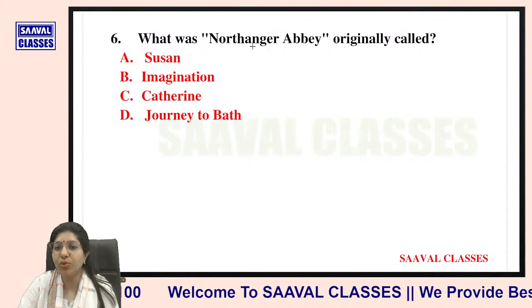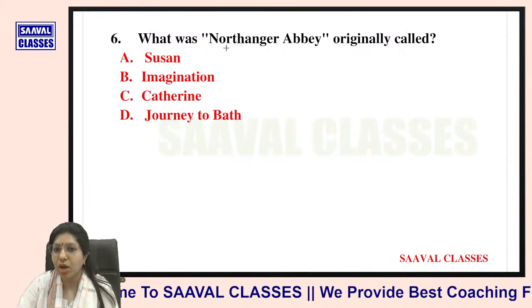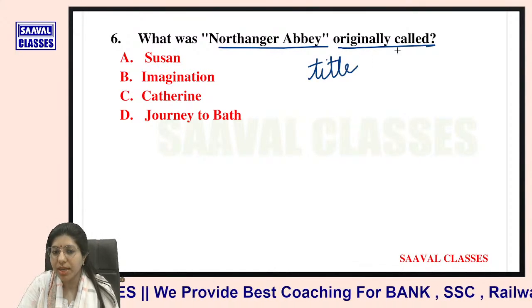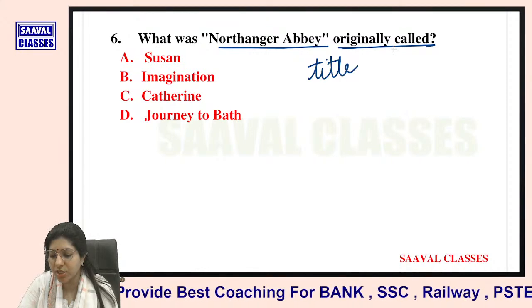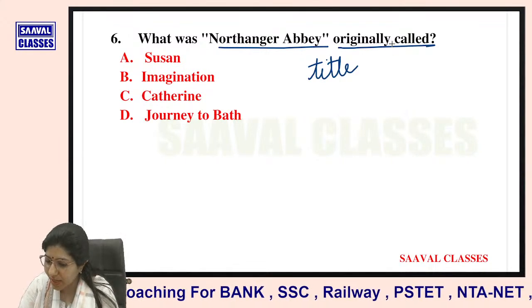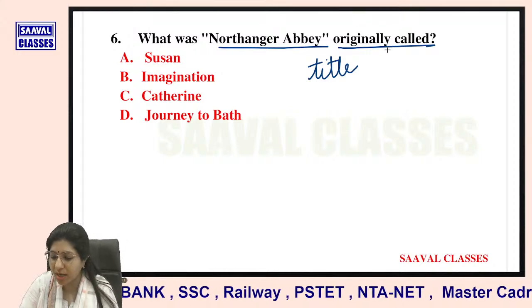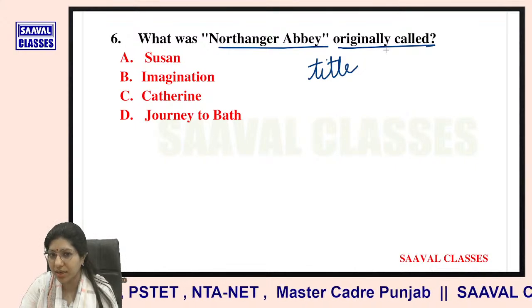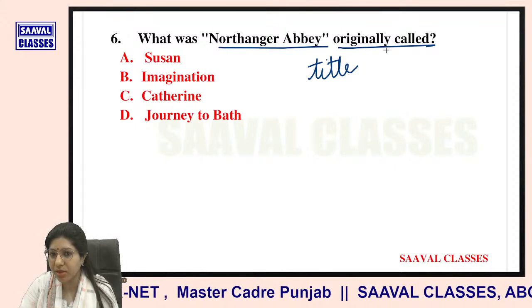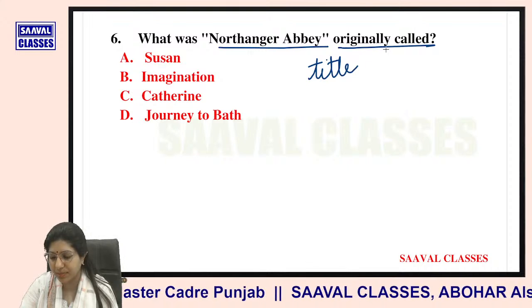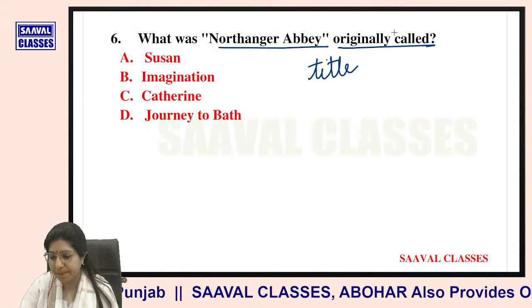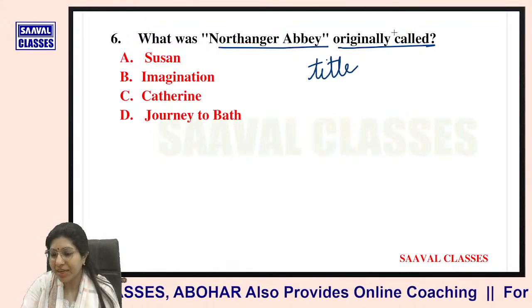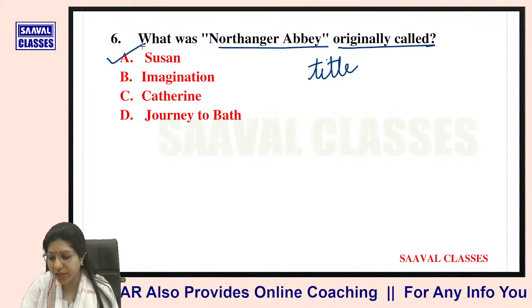Question number six: What was Northanger Abbey originally called? Options are Susan, Imagination, Catherine, or Journey to Bath. Northanger Abbey's original title was Susan — very right.